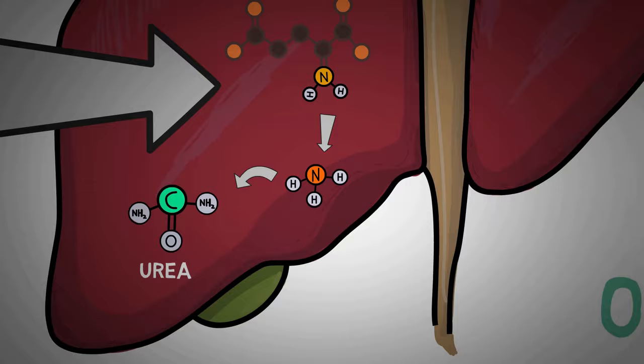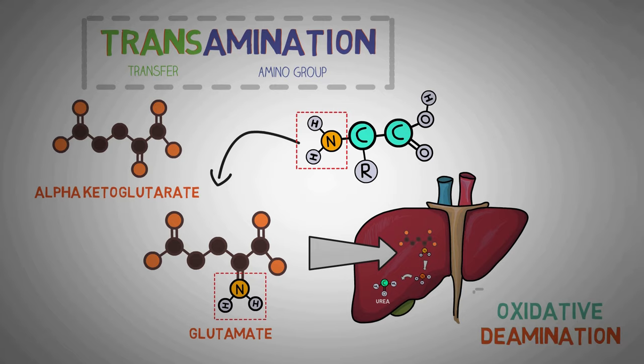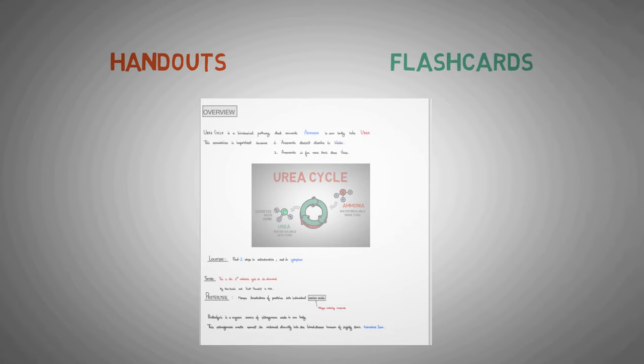So now you know from where is this ammonia coming from and how is it transported to the liver. Now let's begin with the urea cycle. You can get the lecture handouts and flashcards from the topic of urea cycle by joining our channel or joining our community at patreon.com. This will also unlock some of the cool features like behind the scenes, early notifications and much more.